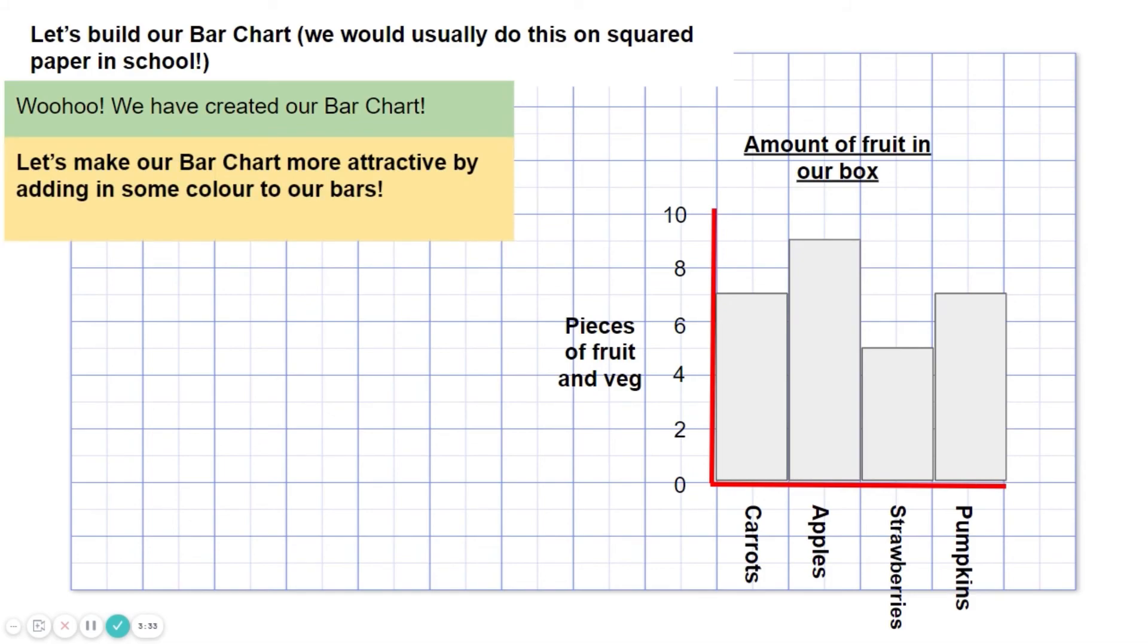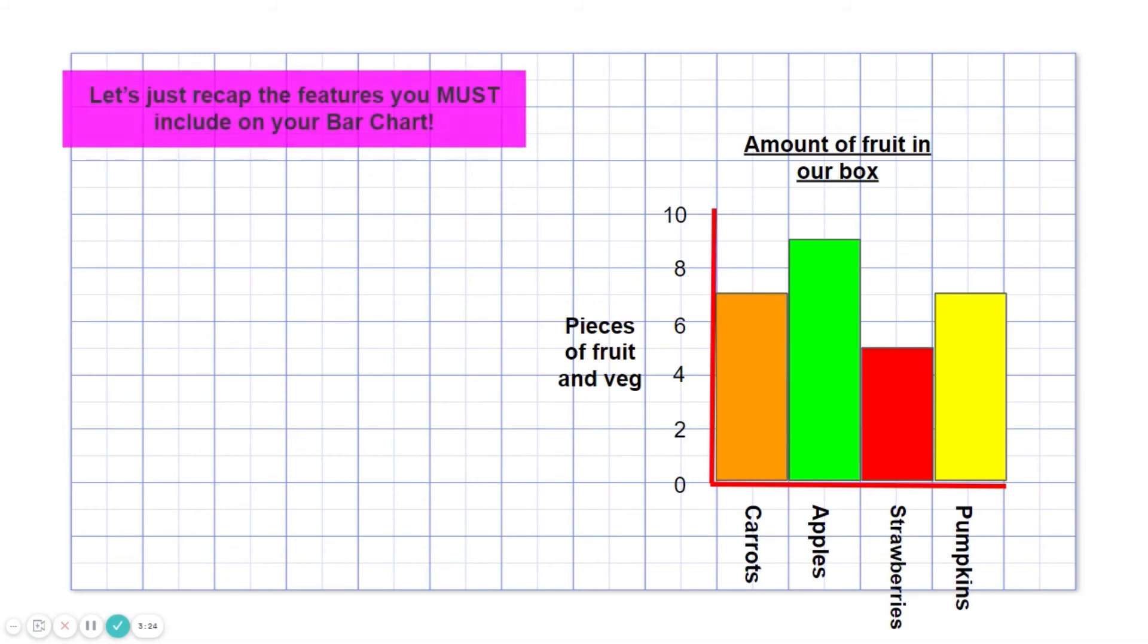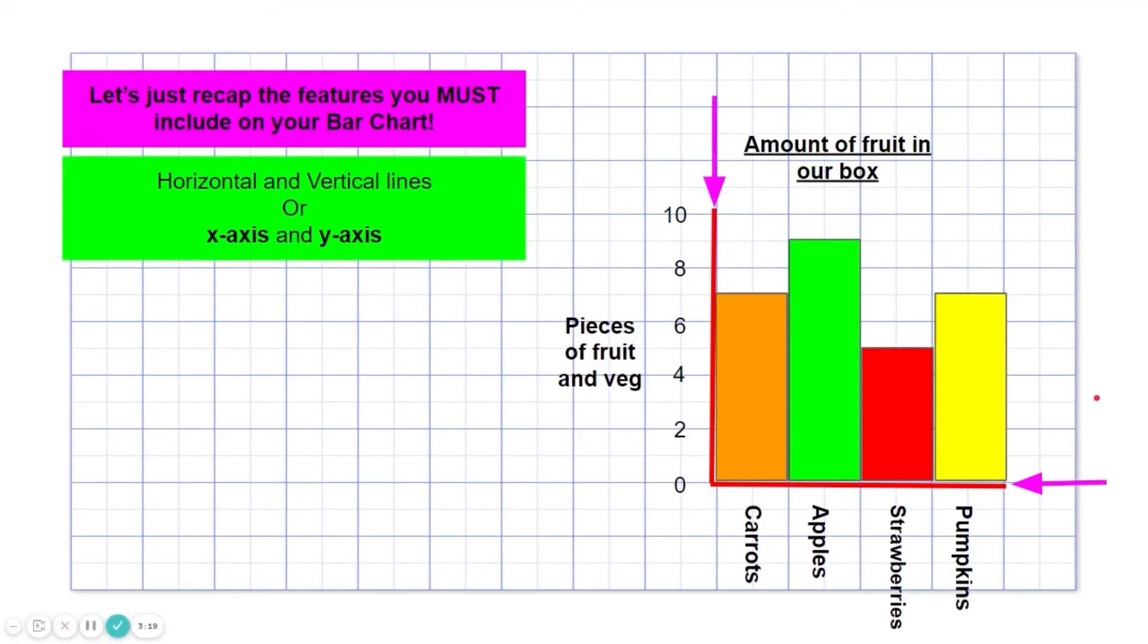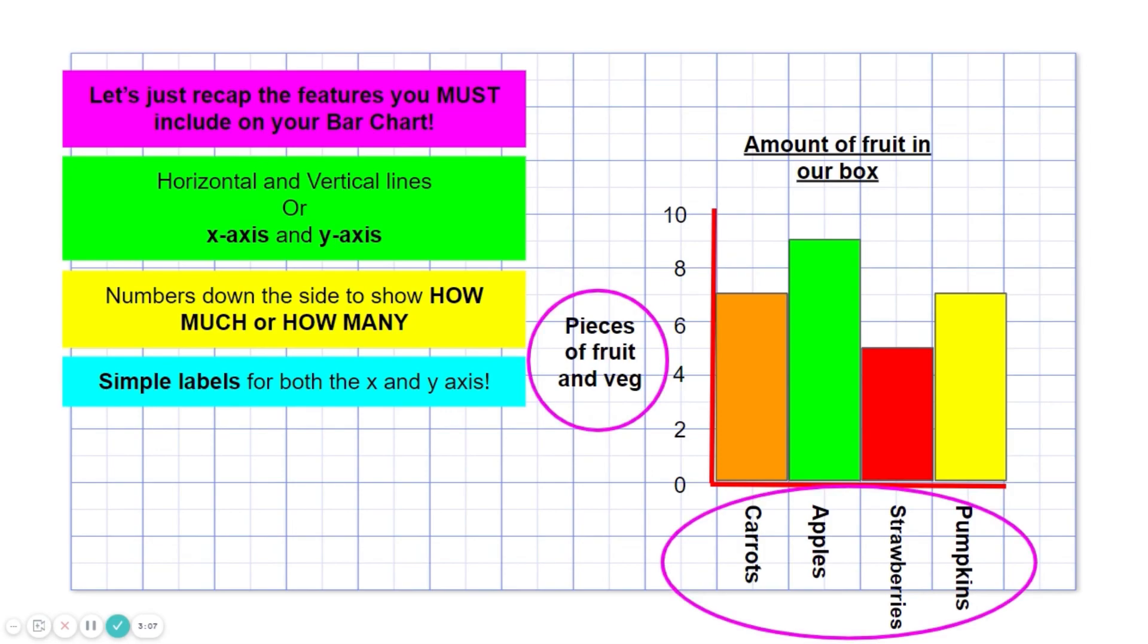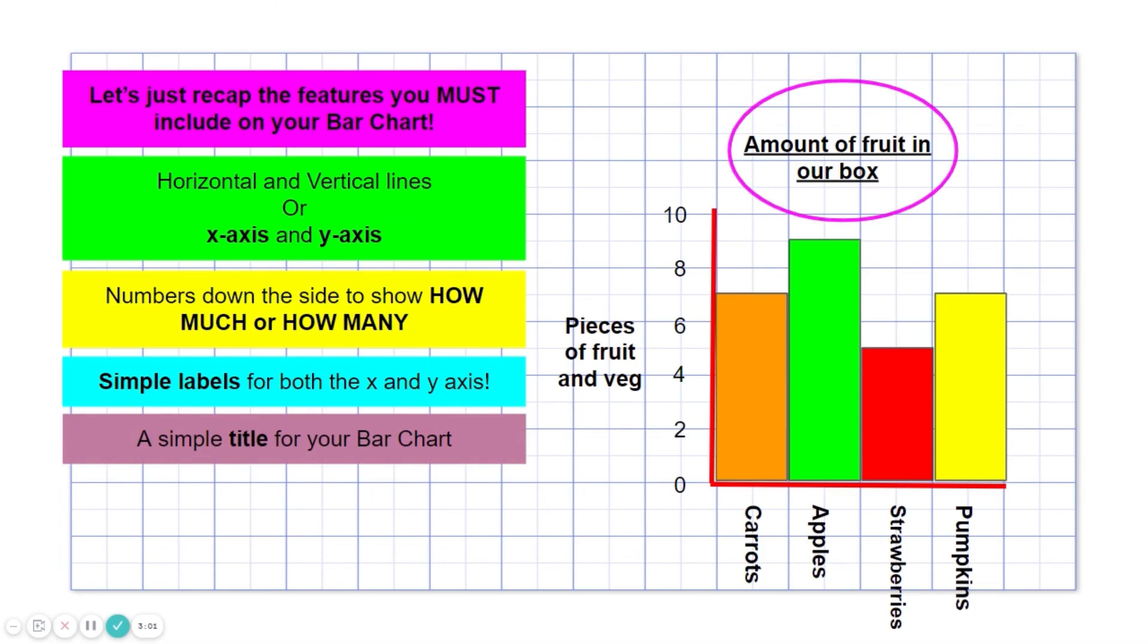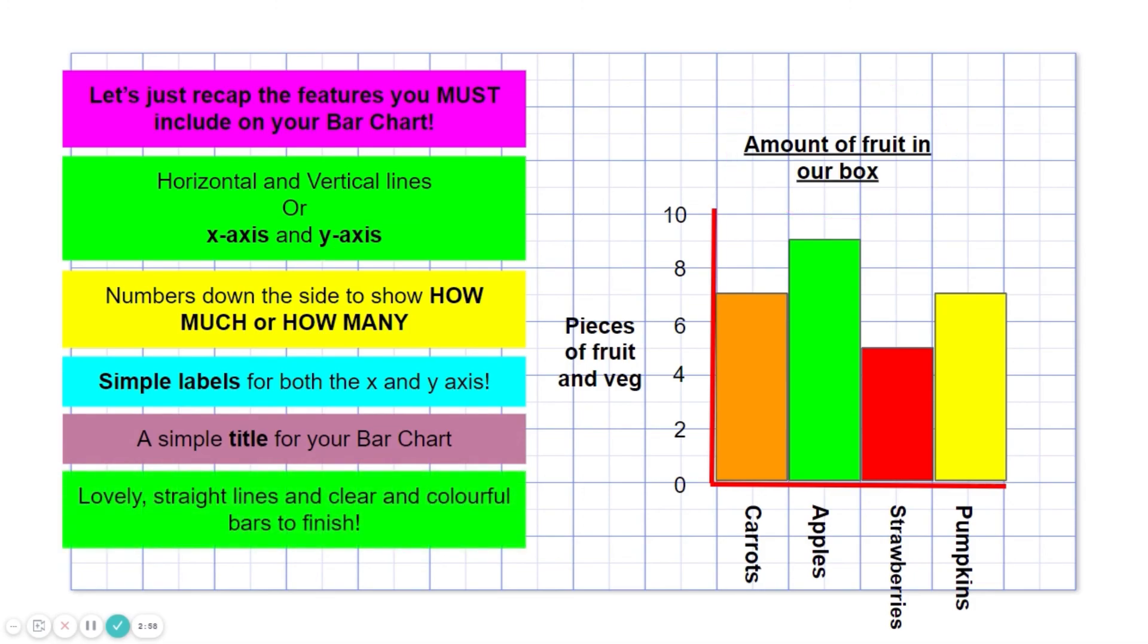Let's make our bar chart more attractive. Much nicer. Let's just recap the features you must include on your bar chart. Horizontal and vertical lines, or the x-axis and the y-axis. Numbers down the side to show how much or how many. Simple labels. A simple title. And lovely straight lines and clear and colourful bars to finish off.